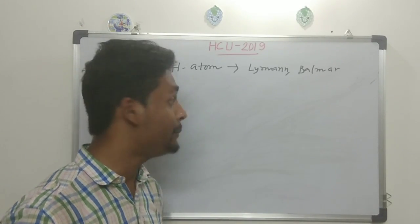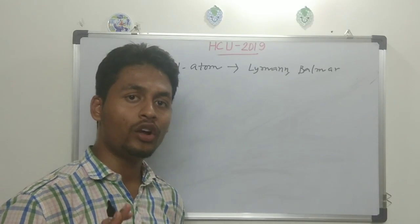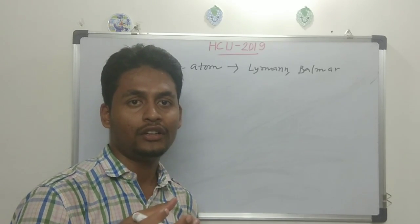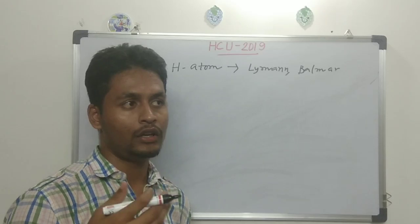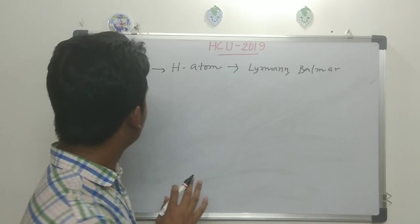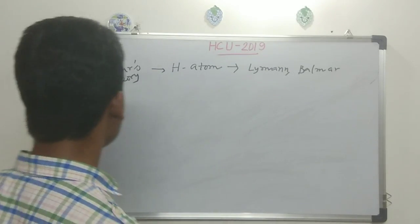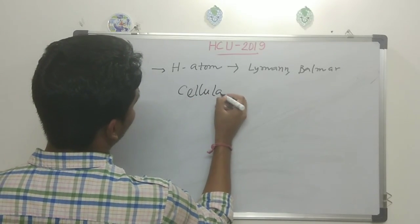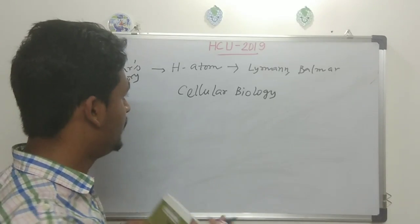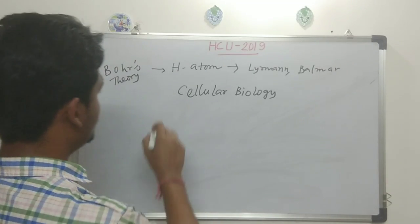One topic you might miss because it's not common in JAM is cellular biology. One or two questions every year are asked from cellular biology, and they are very basic — for example, which organelle generates ATP (answer: mitochondria). It is a vast topic, so I don't recommend reading it all; just go through the previous year questions — that will be enough.